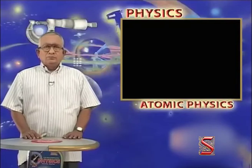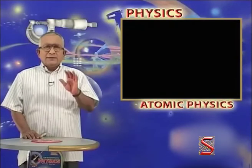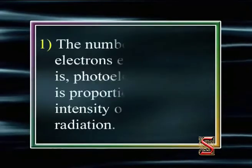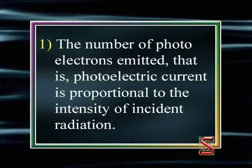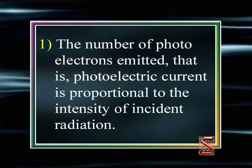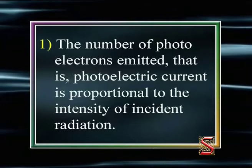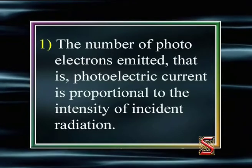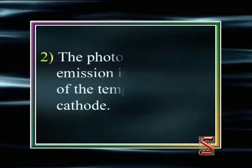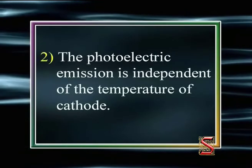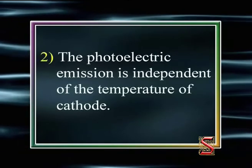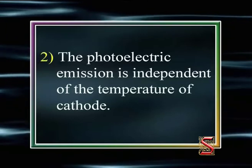We are now summing up the laws of photoelectric emission. The first law states that the number of photoelectrons emitted, that is the photoelectric current, is proportional to the intensity of the incident radiation. The second law is that photoelectric emission is independent of the temperature of the cathode.